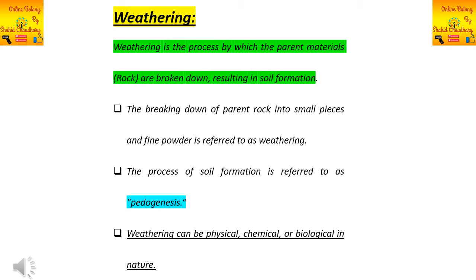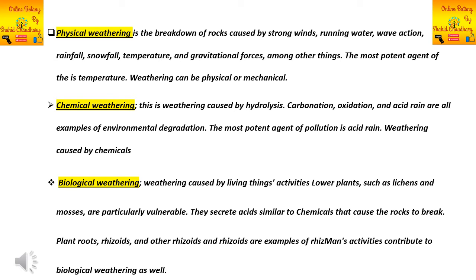Weathering can be of three basic types: physical, chemical, and biological. First, physical weathering is the breakdown of rocks caused by physical factors such as strong winds, running water, wave action, rainfall, snowfall, temperature, gravitational forces, and other similar forces.